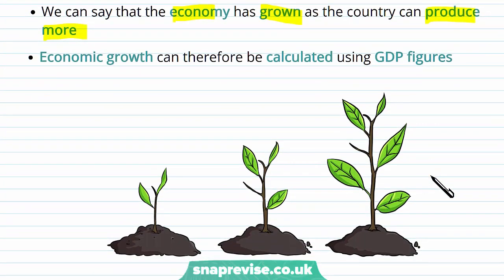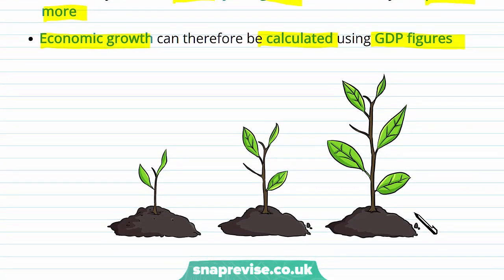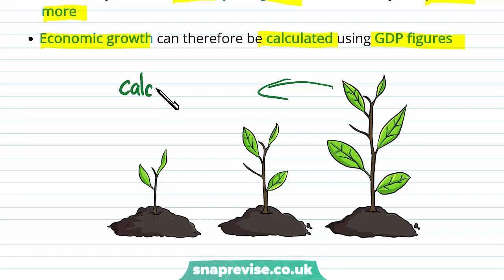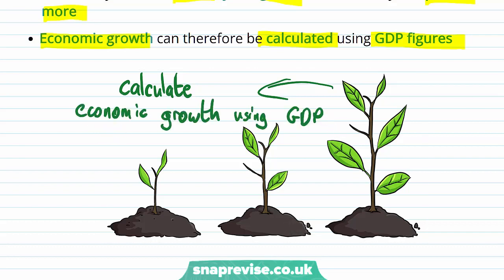Economic growth can be calculated using our GDP figures. We calculate GDP in one year, then calculate GDP in the next year, compare the numbers, and observe our growth level. The definition of economic growth is how much we can produce, and our measure for that is GDP — so we can use GDP as our unit of measurement when calculating economic growth.